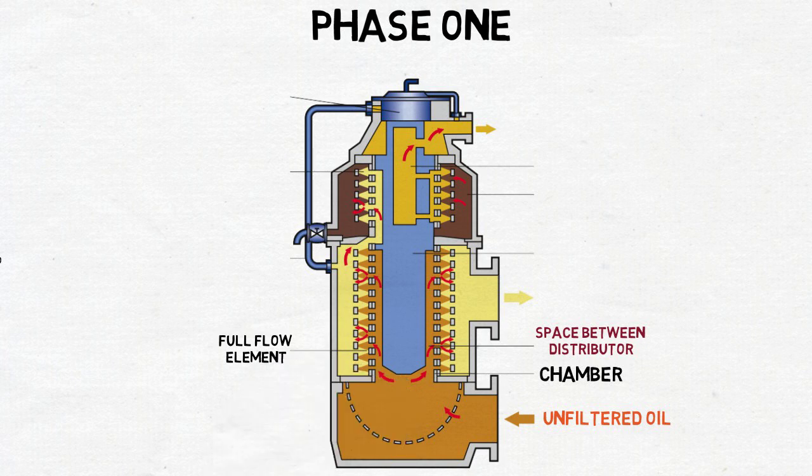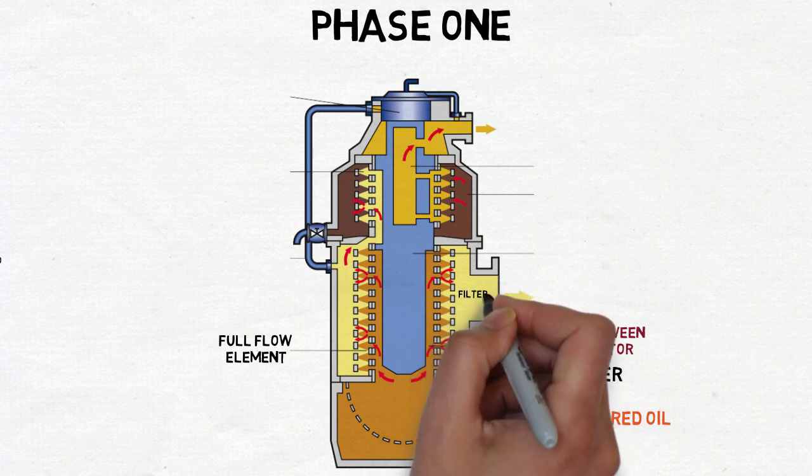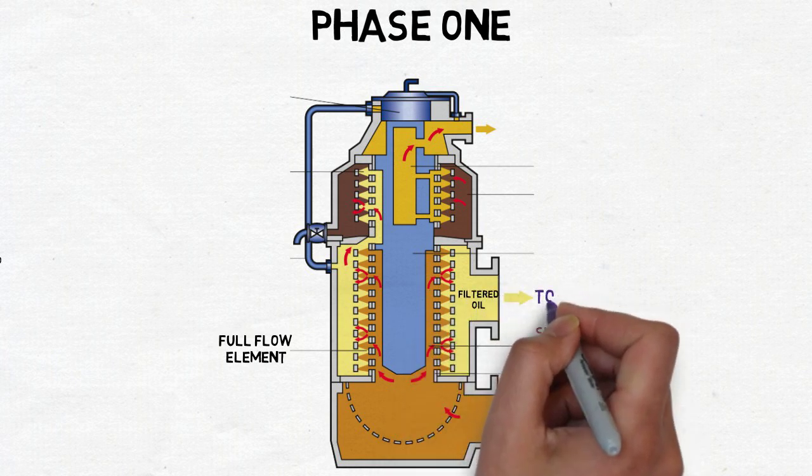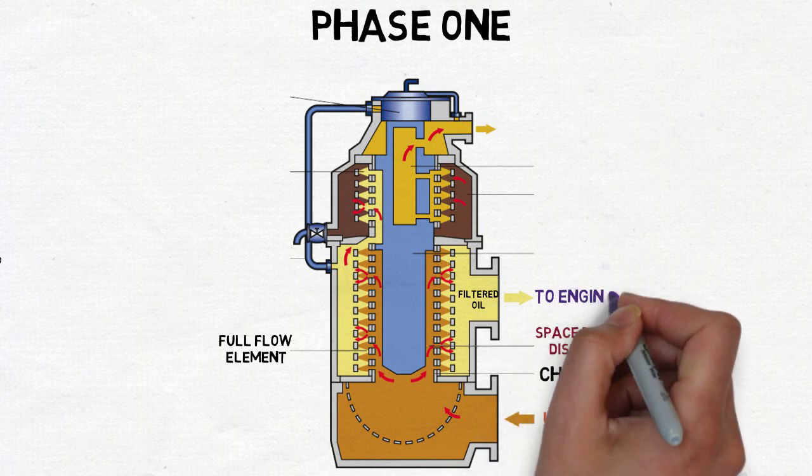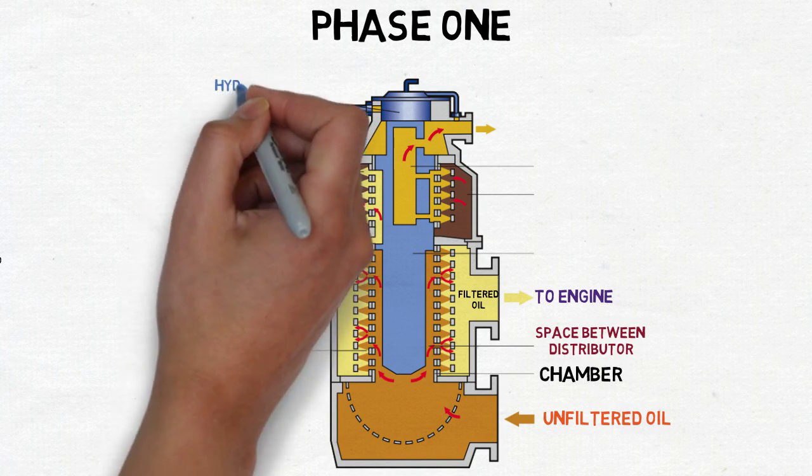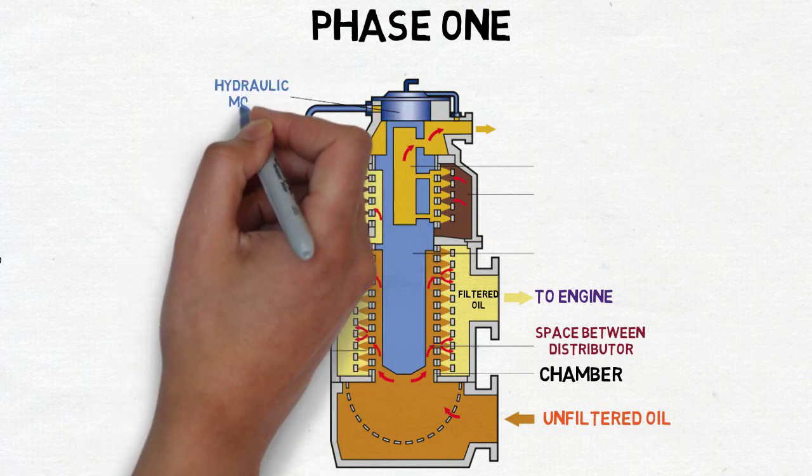From chamber, the oil is distributed into and through the filtering columns formed by the filter elements. The solid particles are trapped. The filtered oil is fed into chamber where it flows to the engine through the filter outlet. Approximately 200 liters per hour of filtered oil flows from the chamber to the hydraulic motor through a feed pipe.